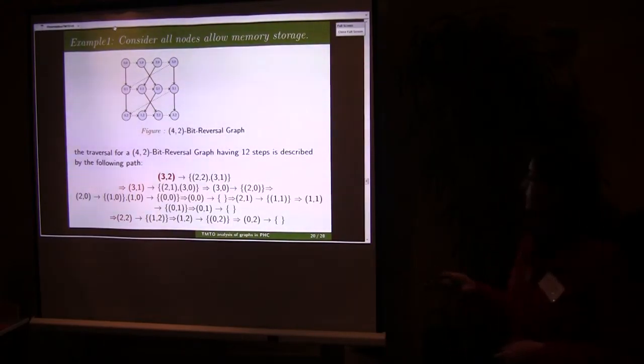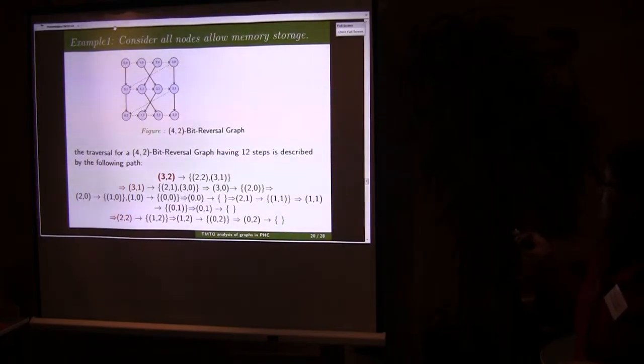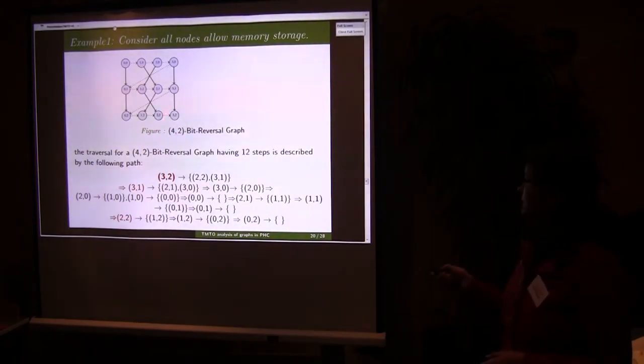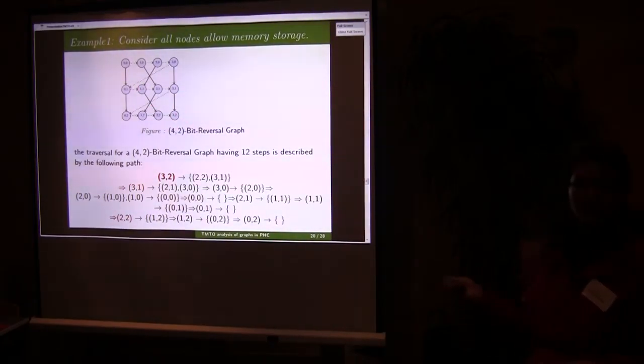This is one simple example showing 4, 2 - number of nodes are 4 and 2 is the levels. So this is 4, 2 bit reversal graph. Suppose we have to calculate node 3, 2. This is the final password hash. If you imagine that this is the whole design showing your password hashing algorithm, it has started from this node and it ends with this last one which is denoted by 3, 2 here. Then we are interested to know the end result, the value at 3, 2 at this vertex.